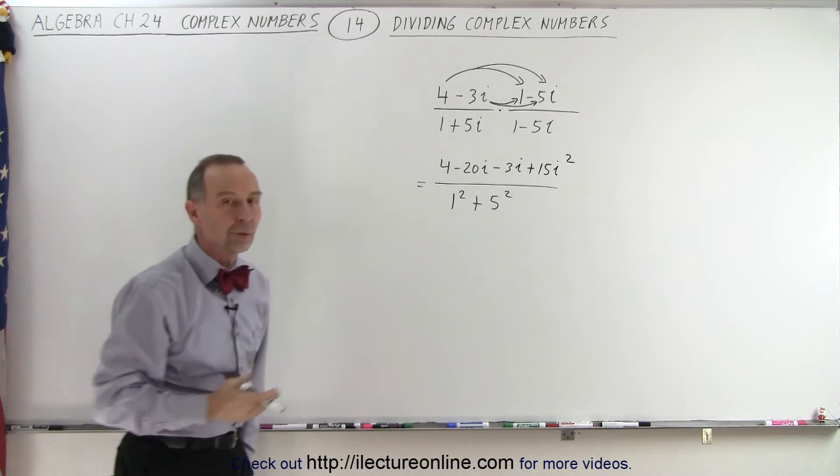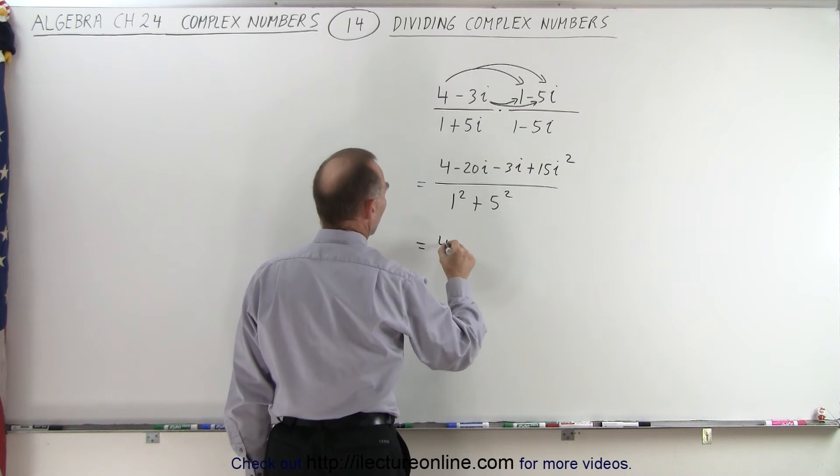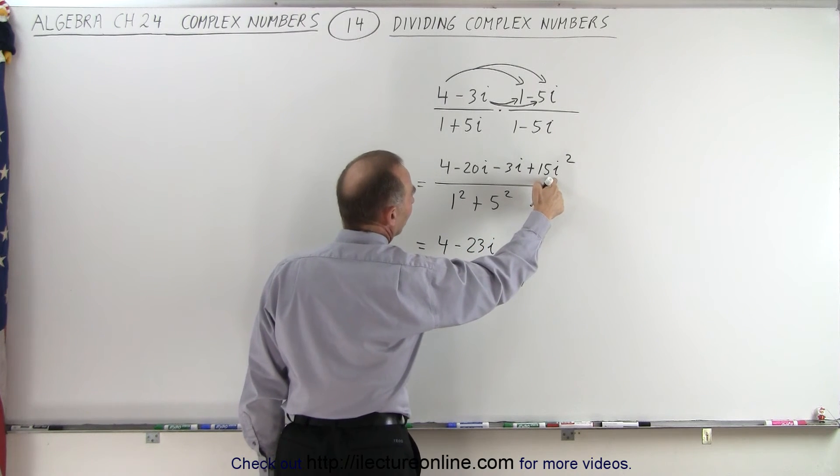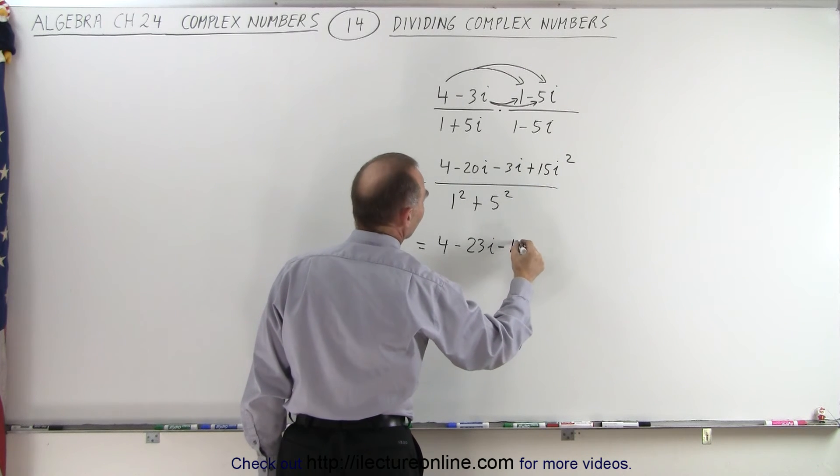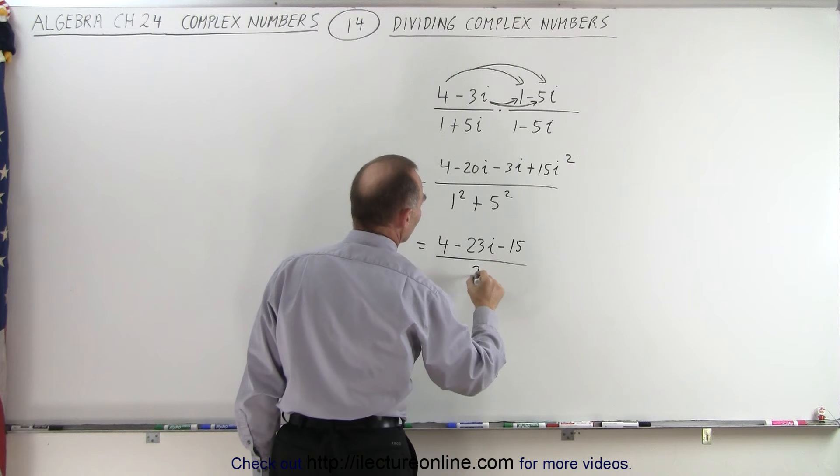And now all we have to do is simplify both the numerator and the denominator. So this becomes 4 minus 23i, and notice i squared is a negative 1, so it becomes minus 15 divided by 1 plus 25, which is 26.